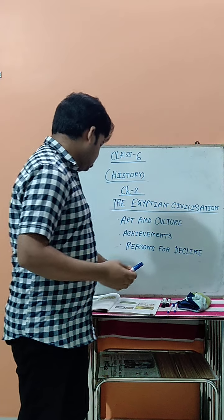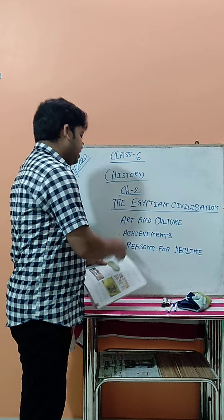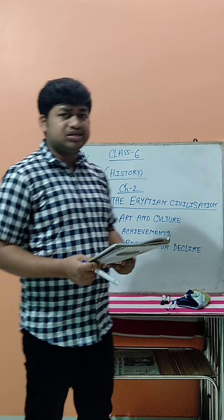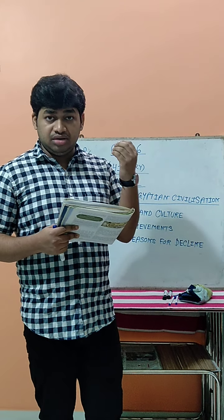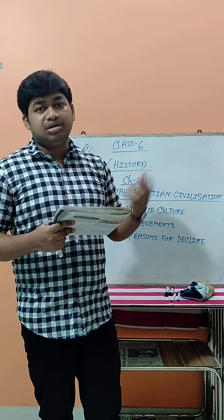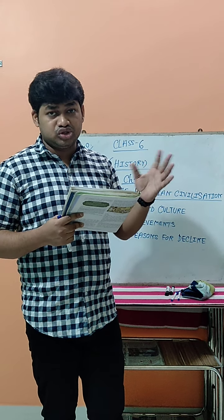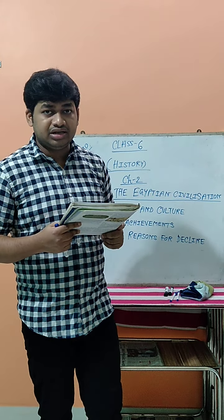Last time we completed up to trade. Now we move to art and culture. The first topic is sculpture. These are statues made by the Egyptian people and are very famous all over the world. They generally made statues of kings, pharaohs, and goddesses. Sometimes they also made statues of lion-headed figures, which represent lion-headed gods.